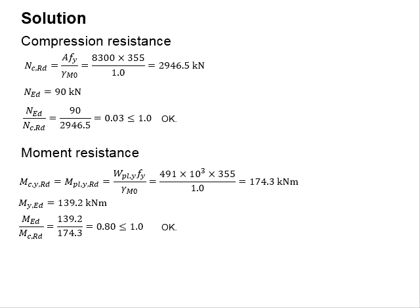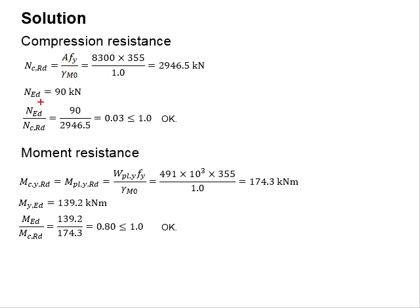Next, determine the compressive resistance of the member using the equation, which is a function of area times yield strength divided by the factor of safety. The resistance is compared with the load and is found to be higher. Therefore, the compressive resistance is considered acceptable.